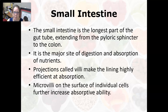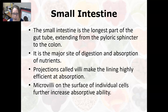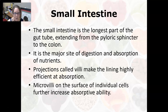The small intestine is the longest part of the gut tube, extending from the pyloric sphincter to the colon. It is the major site of digestion and absorption of nutrients. Finger-like projections called villi line the small intestine, making it highly efficient at absorption by increasing its surface area — roughly as large as a tennis court. The villi also have microvilli on the surface of individual cells, further increasing absorptive ability.